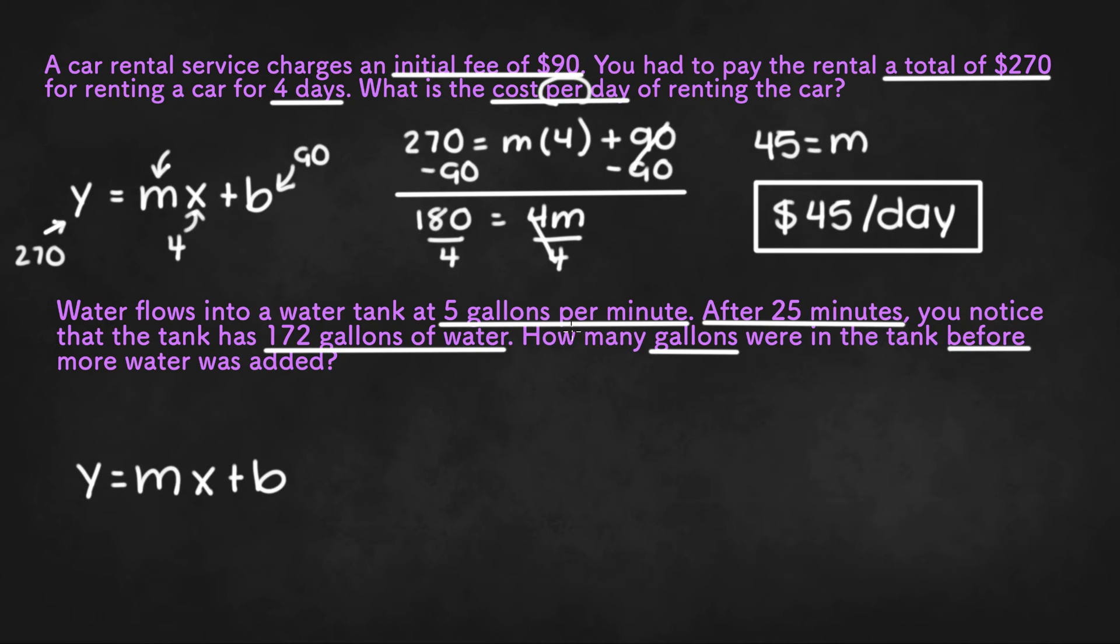So we know that per is a key word for m. So 5 gallons per minute must be the value of m, or 5. And since we have 5 gallons per minute and we have 25 minutes, x must be the number of minutes, or 25.